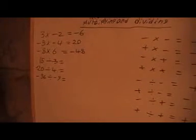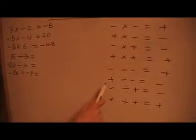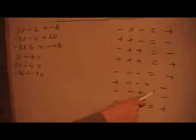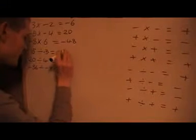Here I've got 15 divided by minus 3. We know that 15 divided by 3 is 5. Now all we need to do is look at the rules to see if it's plus or minus. We've got a plus divided by a minus, and it says that a plus divided by a minus is negative. So that's minus 5.